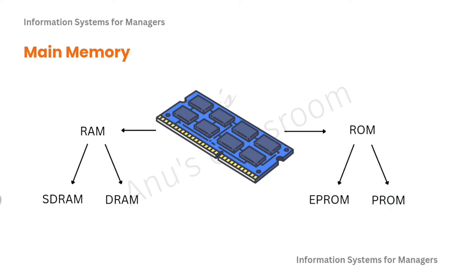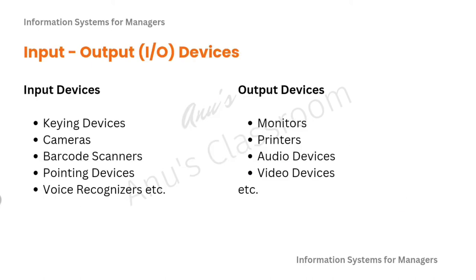Secondary memory includes external hard disks, CDs, and similar storage. Input devices include keying devices like keyboards, cameras, barcode scanners, pointing devices, and voice recognizers. Output devices include monitors, printers, audio devices, video devices, projectors, and external monitors.